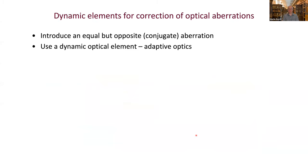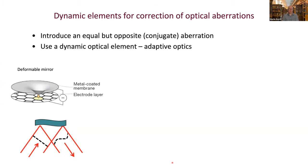To overcome this, we need a way to dynamically correct for the aberrations introduced by the specimen. That is where adaptive optics comes in. The key component is a dynamically reconfigurable optical element that introduces an equal but opposite — conjugate — aberration to compensate for specimen-induced distortions. The most common device is a deformable mirror: a reflective membrane whose shape can be changed by actuators. An incoming flat wavefront reflecting off an appropriately shaped mirror can have its aberrations removed.